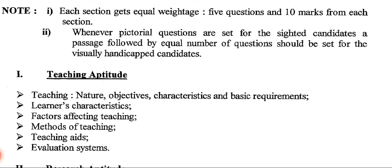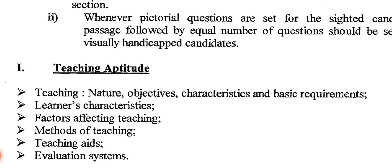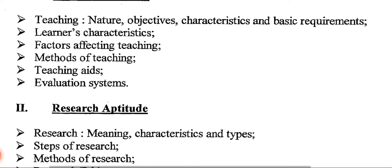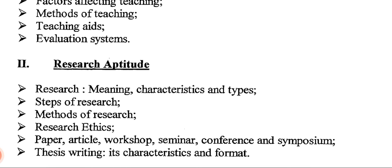Under Teaching Aptitude, you have to read: teaching nature, objectives, characteristics, and basic requirements; learners' characteristics; factors affecting teaching; methods of teaching; teaching aids; and evaluation system. Section two is Research Aptitude.